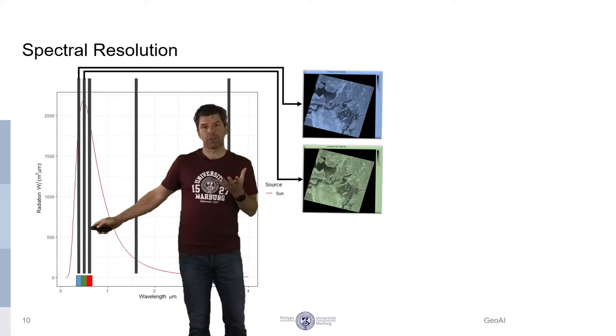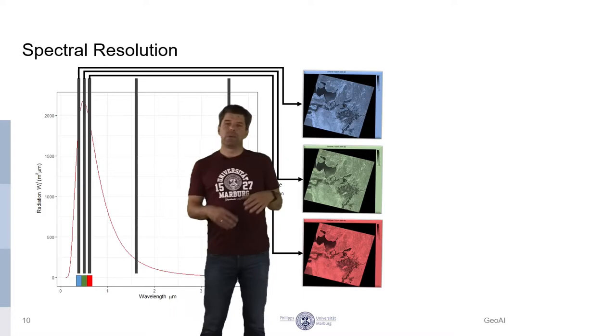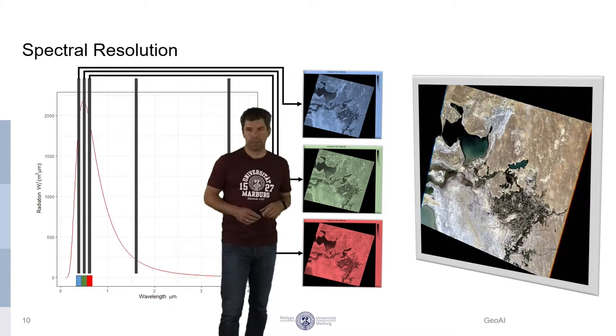and when we use the data from the red channel, so the reflection which is actually recorded here in the red spectrum, and color it in red, and when we overlay these three images, then we get such a true color composite we have seen on the slide before.